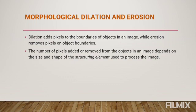Morphological dilation and erosion: the most basic morphological operations are dilation and erosion. Dilation adds pixels to the boundaries of objects in an image, while erosion removes pixels on object boundaries. The number of pixels added or removed depends on the size and shape of the structuring element used to process the image. The state of any given pixel in the output image is determined by applying a rule to the corresponding pixel and its neighbors in the input image. The rule used defines the operation as a dilation or an erosion.